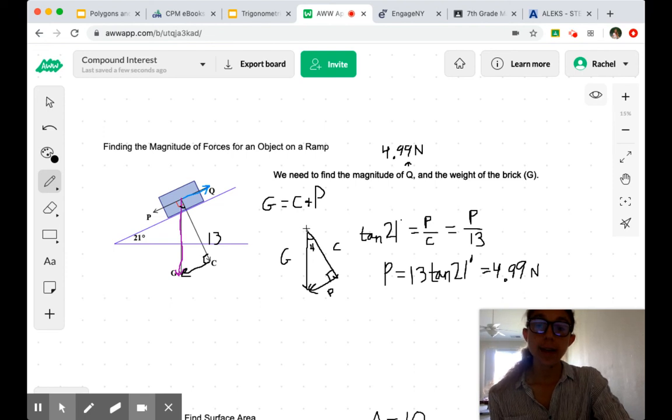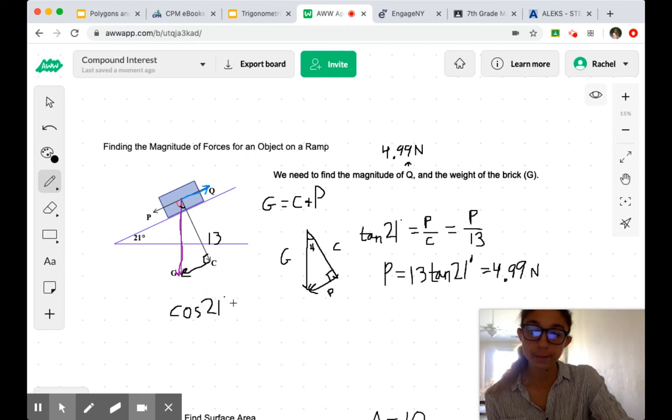we know that C is 13. And we have the adjacent, or this is the hypotenuse, right? Because our angle is over here. And so, if we've got the adjacent side and the hypotenuse, we are going to use the cosine of 21 degrees equals C over G.